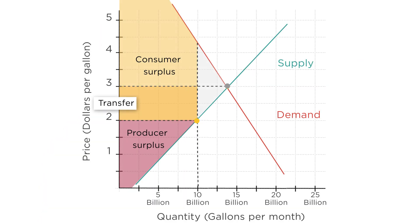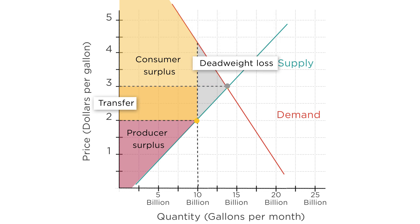Second, there was a loss of some surplus that we call deadweight loss. This triangle used to be part of consumers' and producers' surplus. After the government mandated the price drop, this part of the surplus is gone. The deadweight loss is a reduction in welfare that results from trades that are not made. The key point is that any time there are trades that would make both parties better off but that don't get made, there's a reduction in welfare. In economic terms, we say that any limitations on such trades are inefficient.